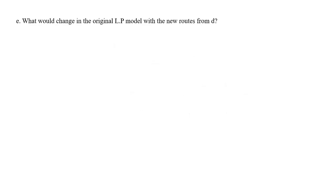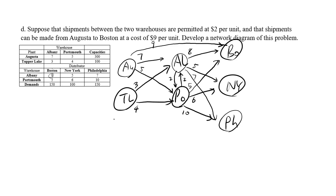The final question for this problem is what would change in the original linear programming model with the new routes from D? We will start by numbering things 1, 2, 3, 4, 5, 6, 7. Let's assume that we have the linear program for everything for the original problem and we will just write down the changed parts.